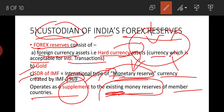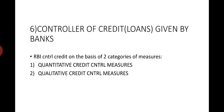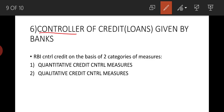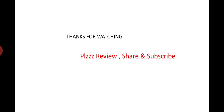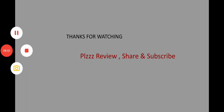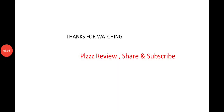The last and very important function is controller of credit — that is, loans given by banks. RBI controls credit on the basis of two categories: quantitative credit control measures and qualitative credit control measures. In the next part, we will study these measures in detail. Thanks for watching — please review, share, and subscribe.